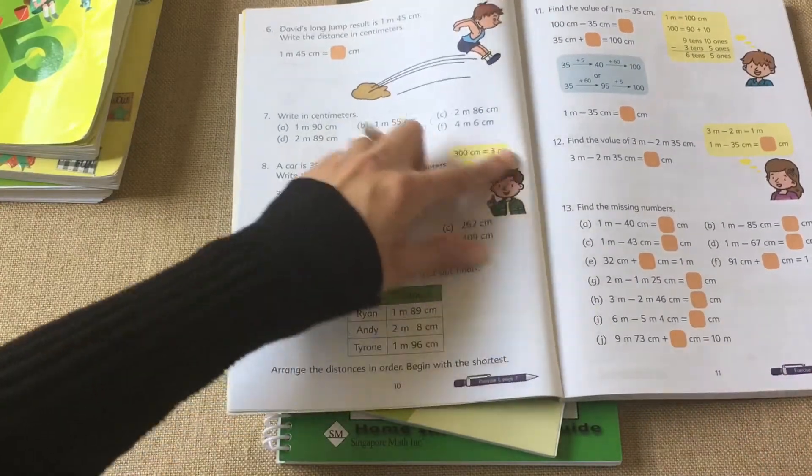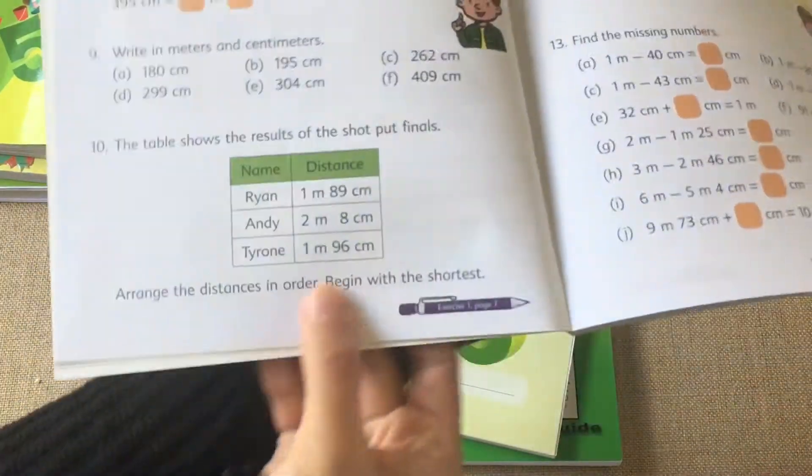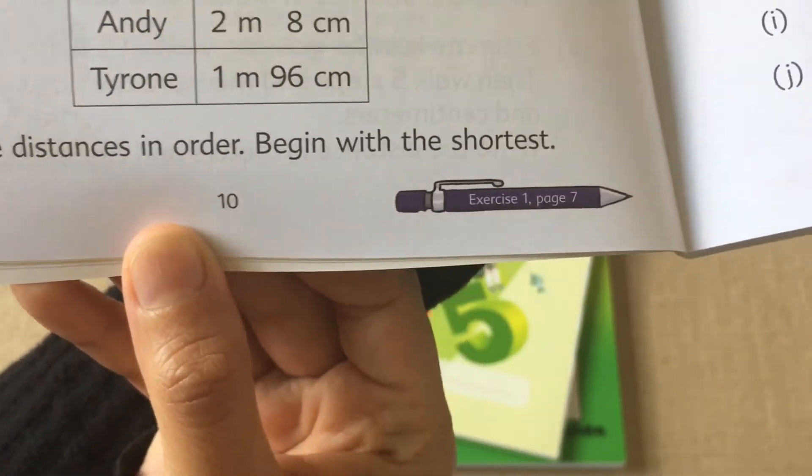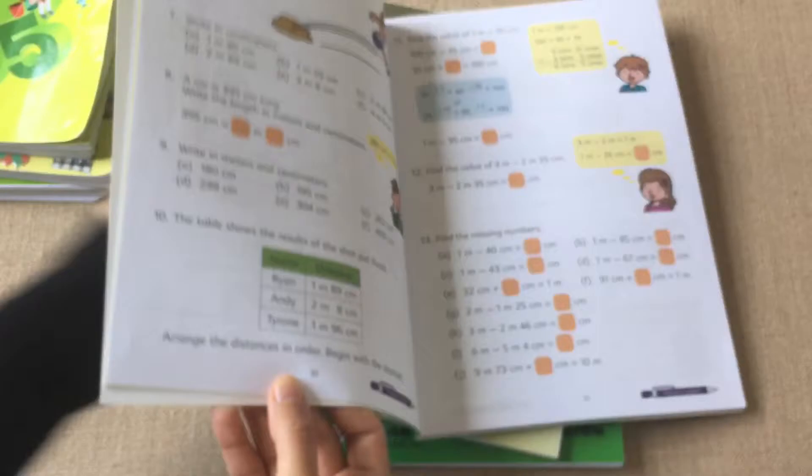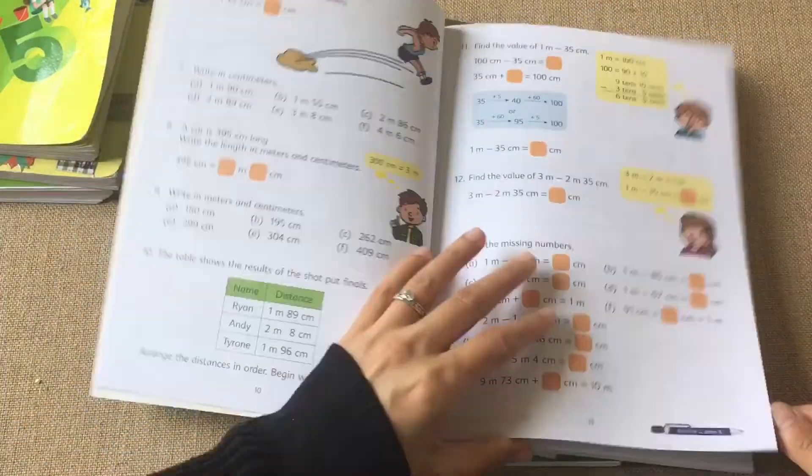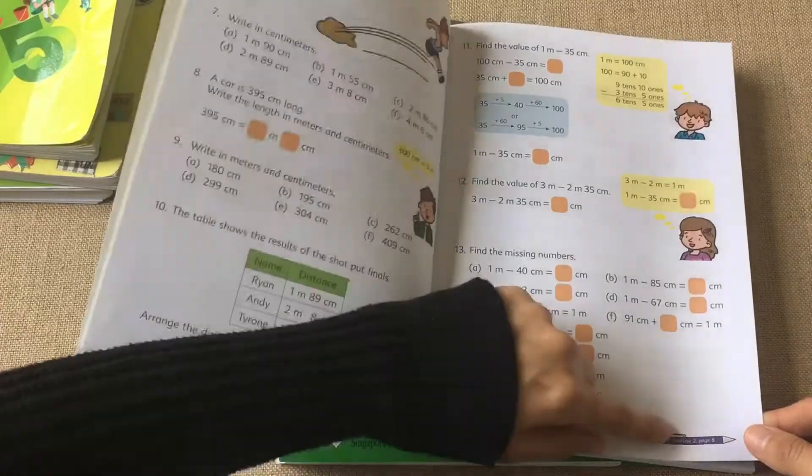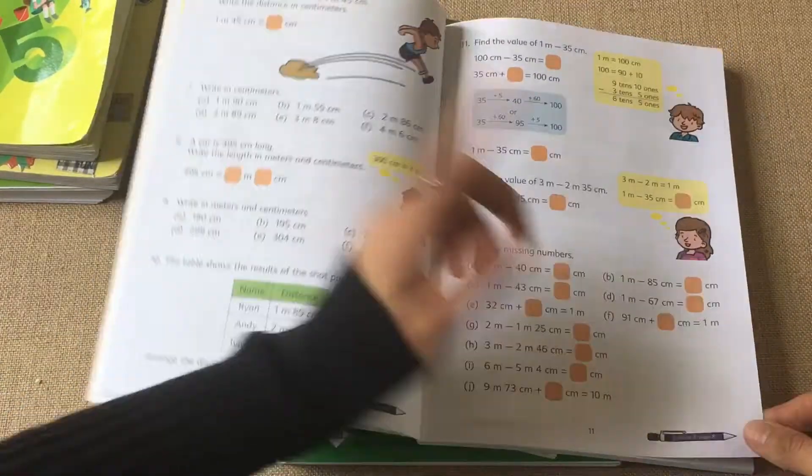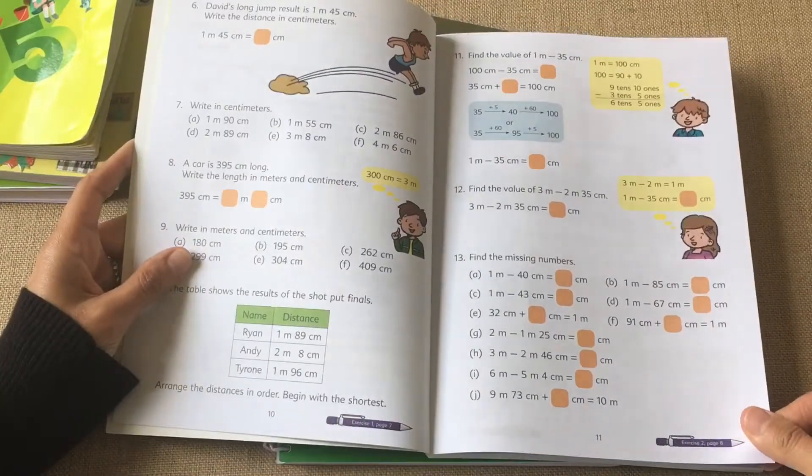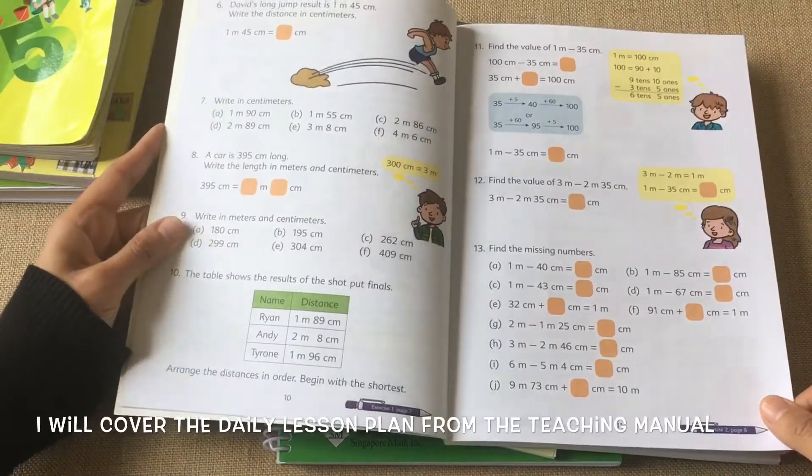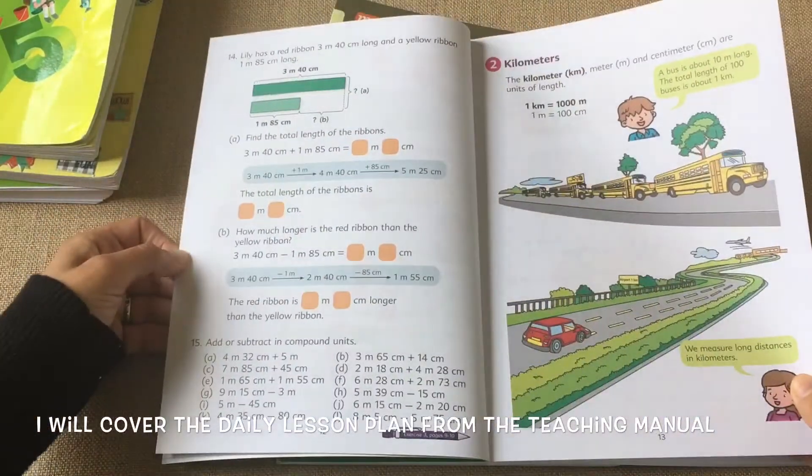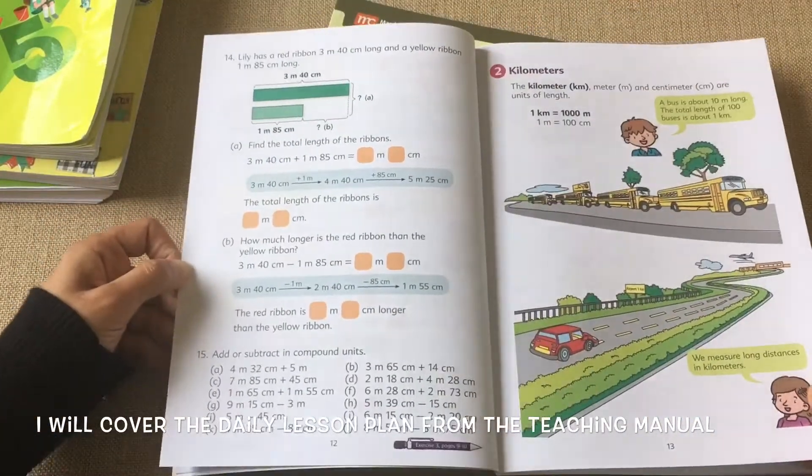You go through the lesson and once you teach a concept there's some practice problems. Every time you finish a section there is a little pen mark which tells you which workbook pages to do right after. I do a couple of textbook pages and assign the corresponding workbook pages to my son.